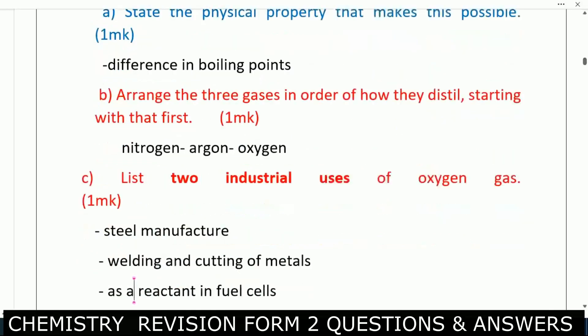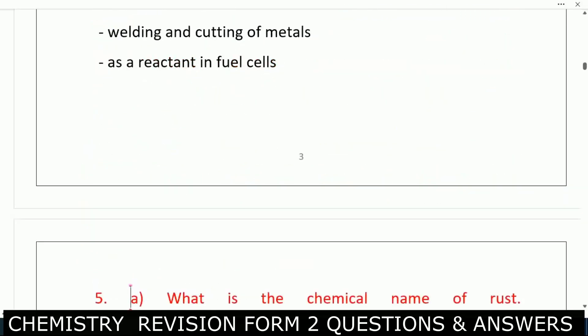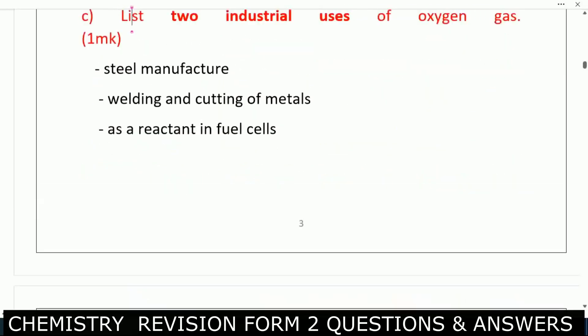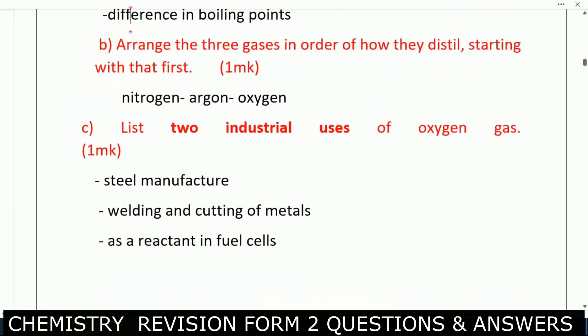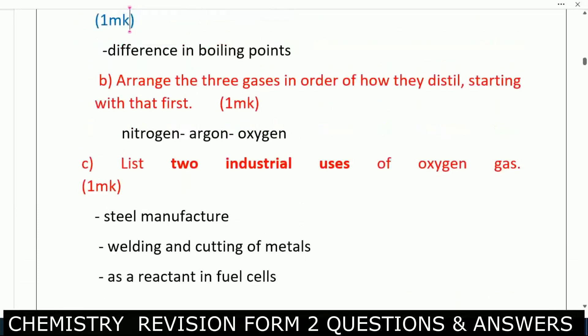Next, you are told to arrange the three gases in order of how they distill, starting with the first. The first one to distill is nitrogen, then argon, then oxygen — depending on their boiling points.